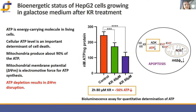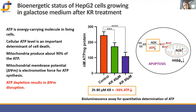ATP is the energy-carrying molecule in living cells, and its level is an important determinant of cell death. Kinetin riboside can disrupt energy balance through phosphorylation by adenosine kinase, which is crucial for its toxicity. In galactose medium, HepG2 cells undergo extensive apoptosis after kinetin riboside treatment, likely a direct consequence of rapid ATP depletion. The decrease in ATP was detectable within 2 hours and dropped over 56% in cells exposed to the highest kinetin riboside dose, indicating that rapid ATP depletion is an early consequence leading to loss of cell viability.